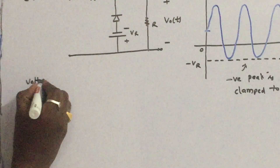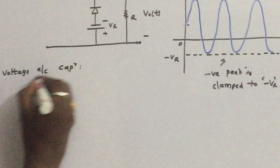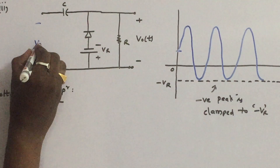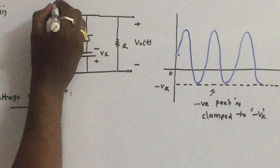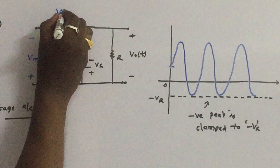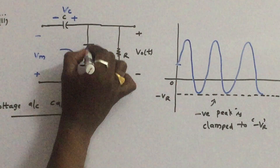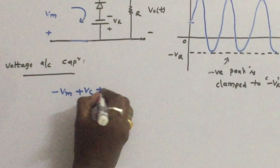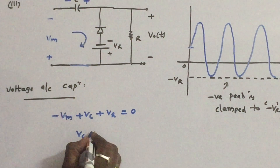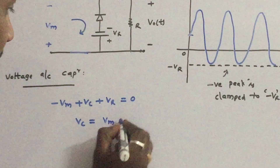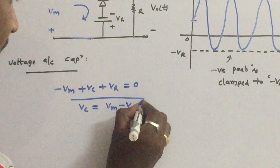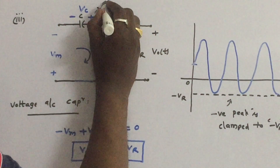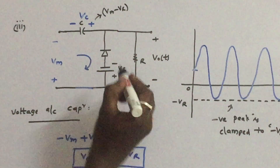Let us find the voltage across the capacitor and the output voltage expression for Case 3. Take the input polarity as minus plus Vm. Under this input condition, the diode gets forward biased and the capacitor charges with polarity Vc. Apply KVL: minus Vm plus Vc plus Vr equals zero. Therefore Vc equals Vm minus Vr. The capacitor charges to Vm minus Vr with this polarity.